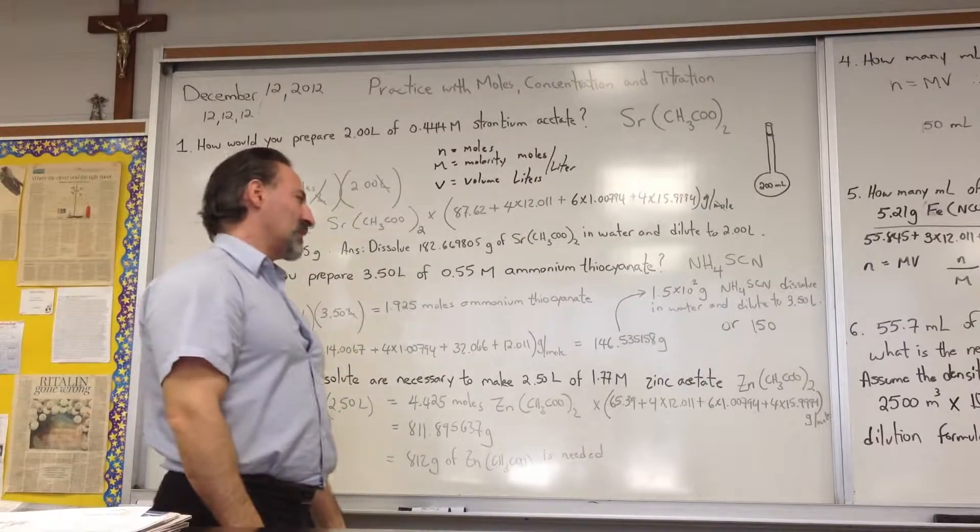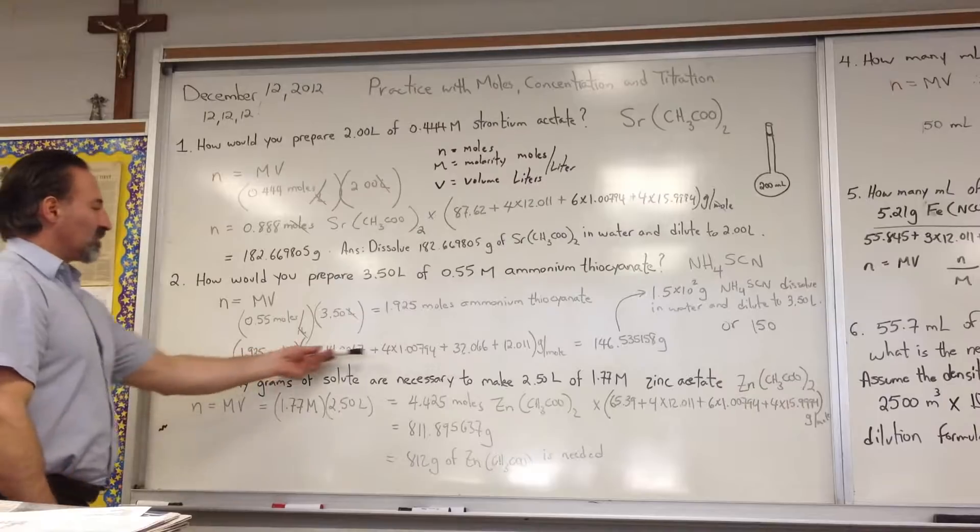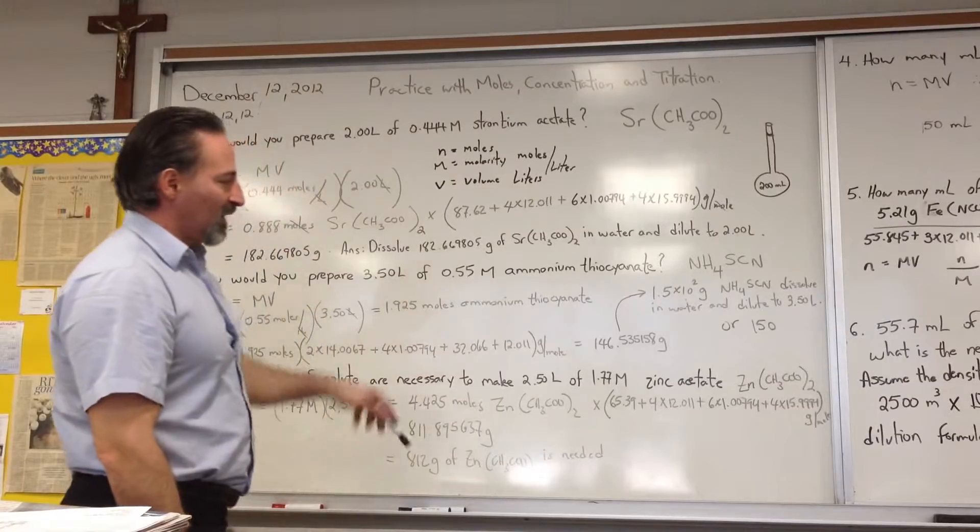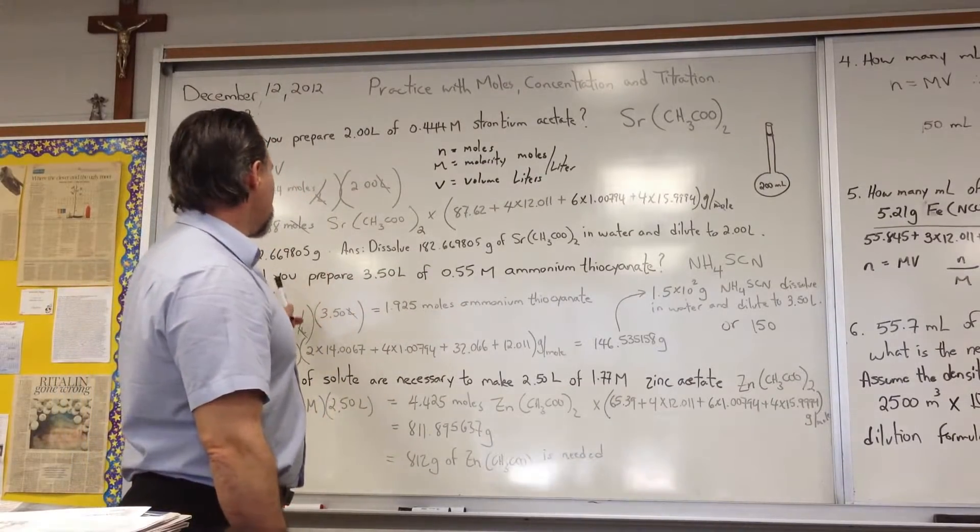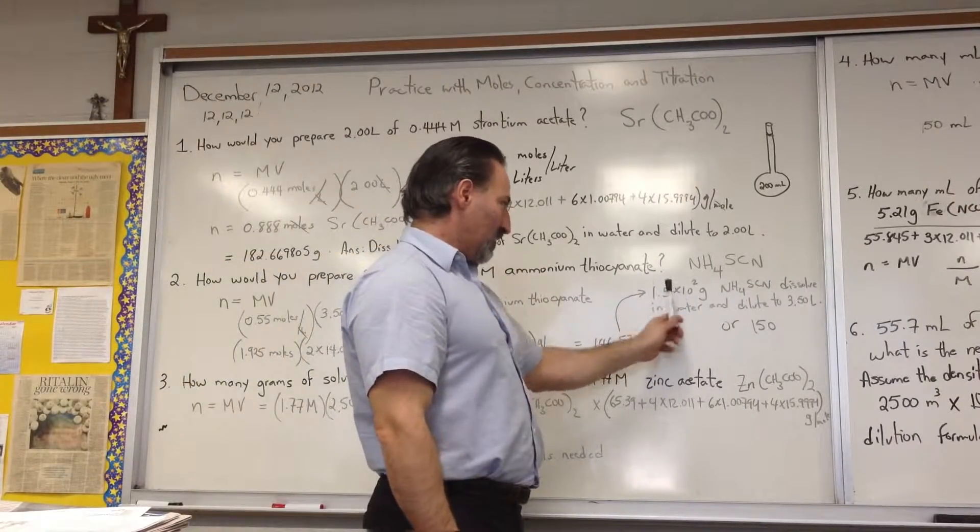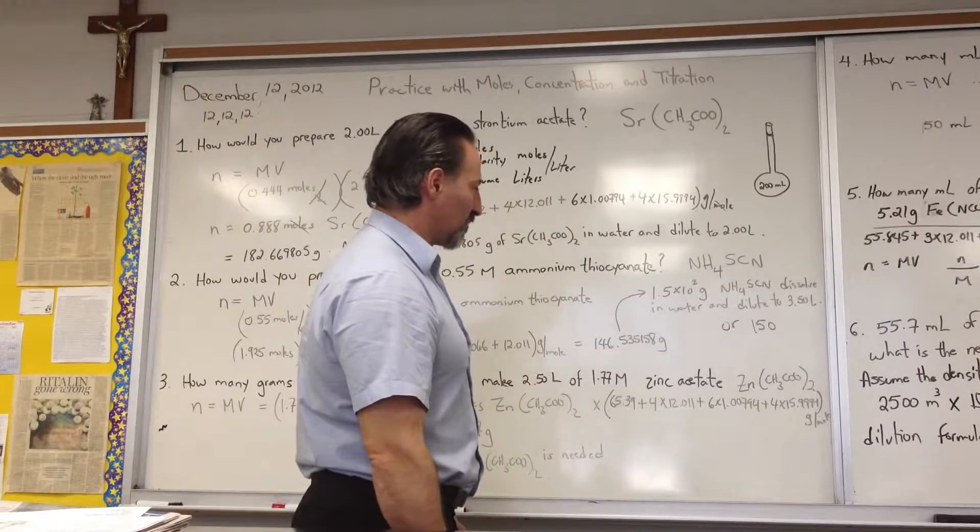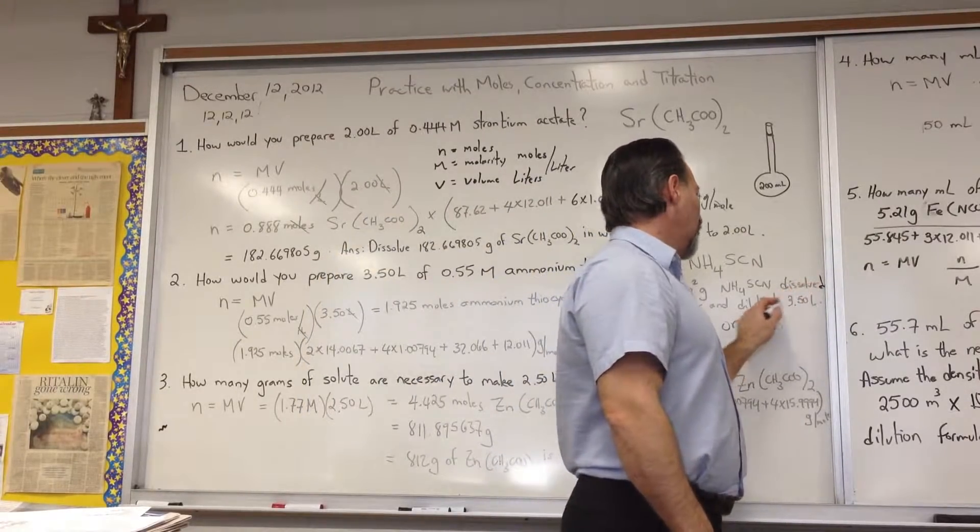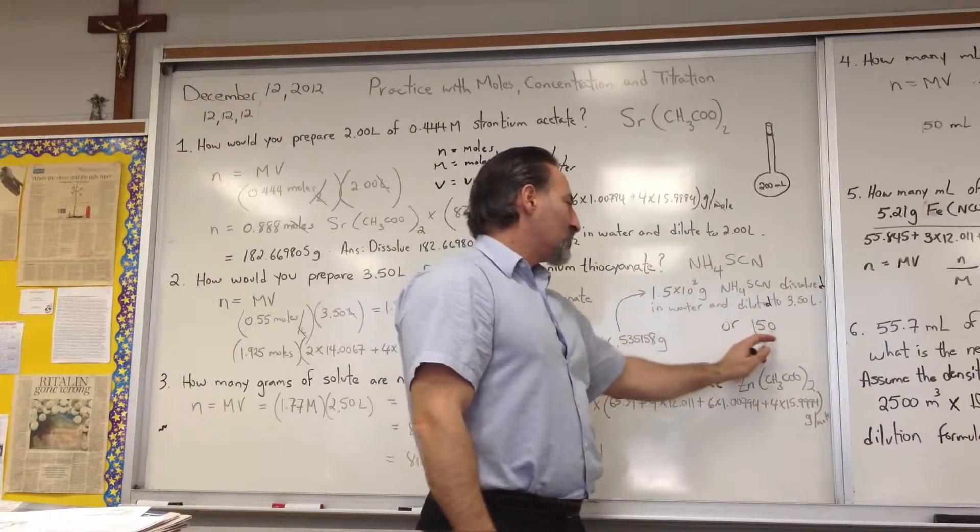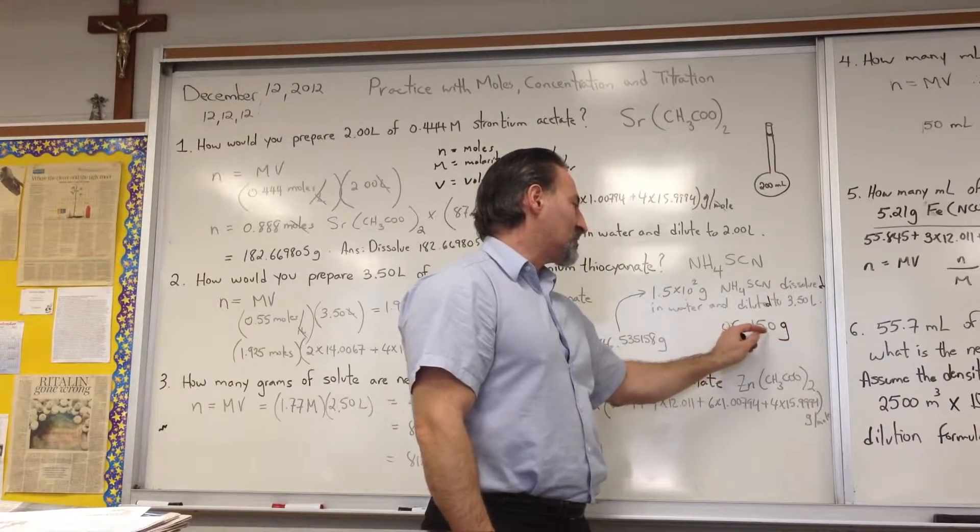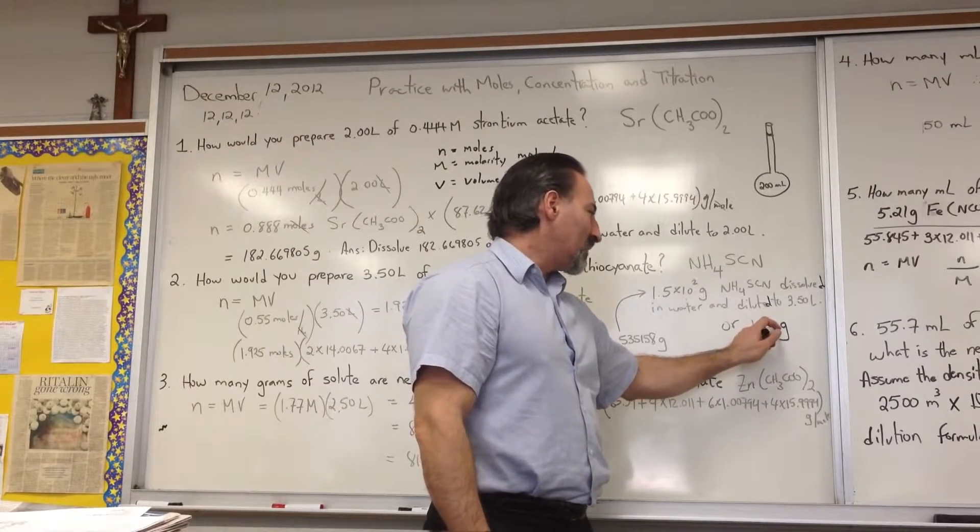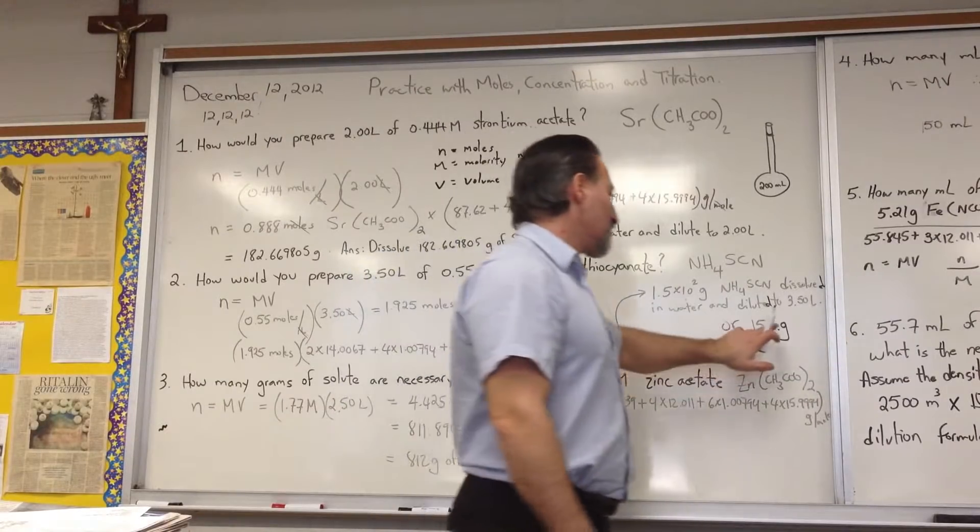1.925 moles of ammonium thiocyanate is needed. If you know how many moles, and you multiply by the molar mass calculated here in this bracket, you get that you need 146.535158. Again, the question is formulated with only two significant figures of accuracy, so you could get away with answering 1.5 times 10 to the 2 grams of ammonium thiocyanate dissolved in water and diluted to 3.5 liters. This is two significant figures. You could also write it as 150 grams. That's also two significant figures. This zero is a spacer. It doesn't count as a significant figure. The only way it would count as a sig fig is if you put a decimal place there. Just be aware of that.